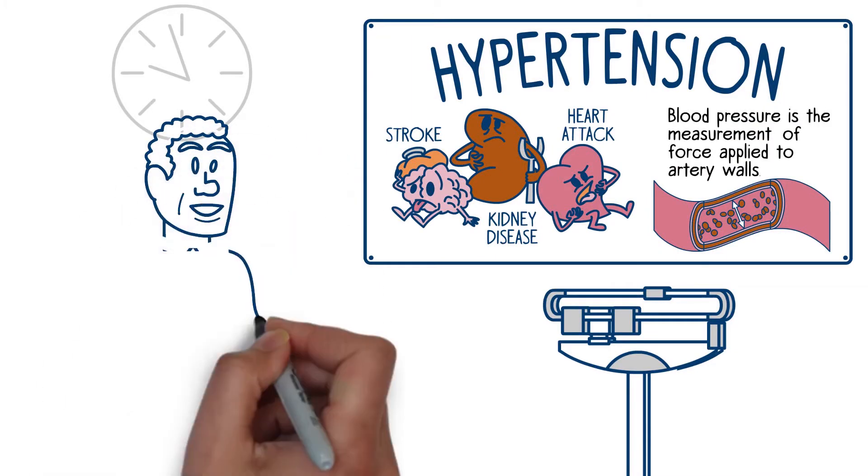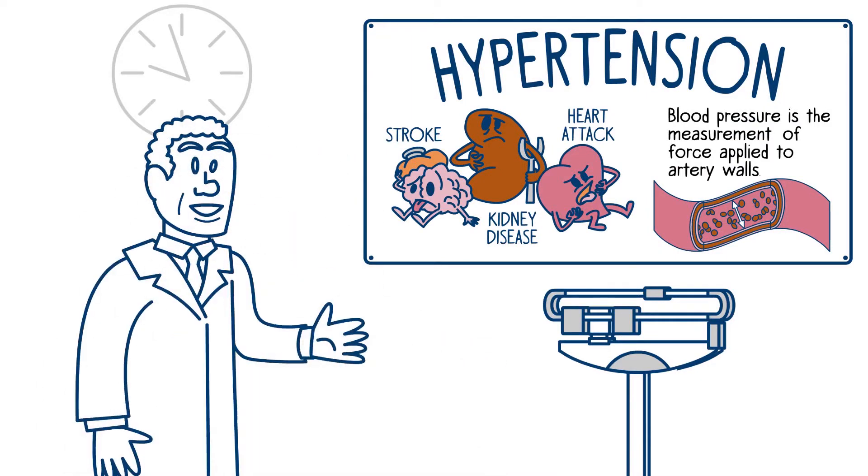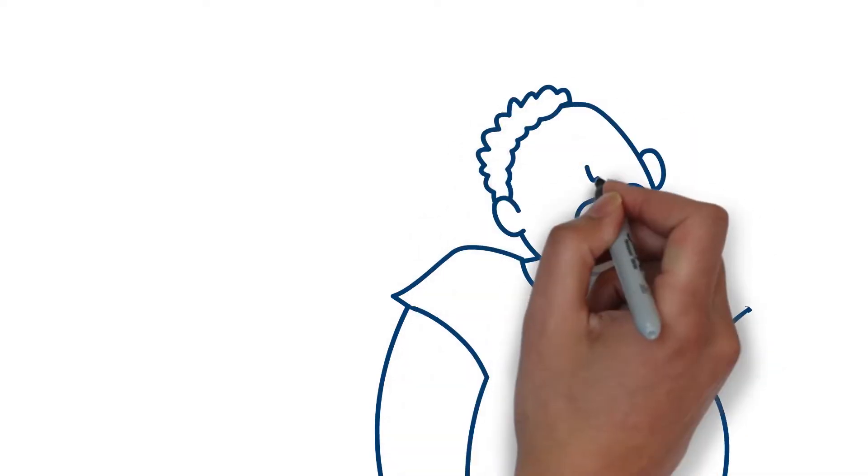That's why checking and treating hypertension is so important. The higher your blood pressure and the longer it goes uncontrolled, the greater the damage. High blood pressure can be a silent killer.